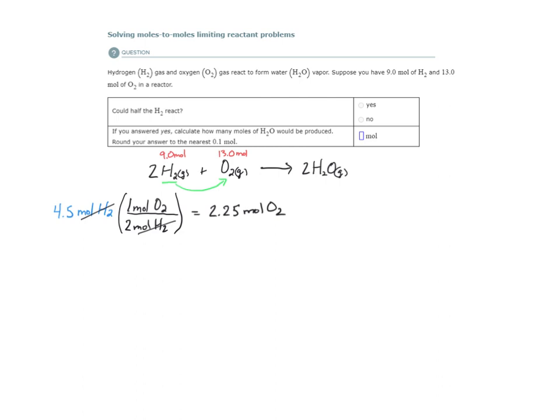And so do I have 2.25 moles of O2? Yeah, I have 13. So could half of the H2 react? Absolutely, because I have more than enough O2 for it to react with. So if you answered yes, calculate how many moles of H2 would be produced. So what this is asking us to do is just to figure out how much product, how much water would I make from 4.5 moles of H2.